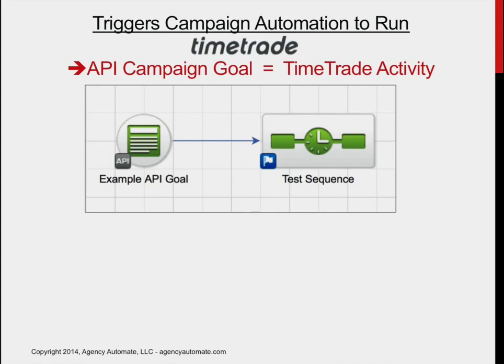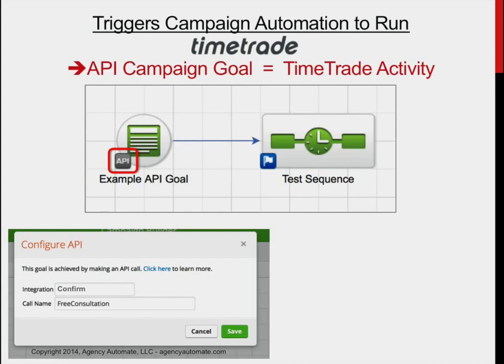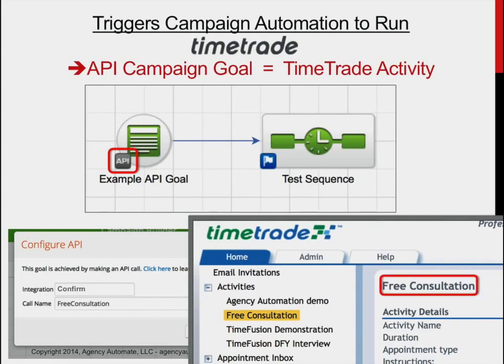What about triggering campaign automation to run? In the case of TimeTrade it's very simple. You set an API campaign goal in Infusionsoft to use the same name as the TimeTrade activity. Here we're showing a picture of an API goal in Infusionsoft that drives a test sequence — it's of type API. When you open that up you can see it's got two fields to fill in: integration and call name. We're going to use an integration name of "confirm," which means new appointment. The call name is set to Free Consultation — that's the name of our TimeTrade activity. I had to take the space out because in the API goal you cannot use spaces or punctuation, but other than that it's the very same name.